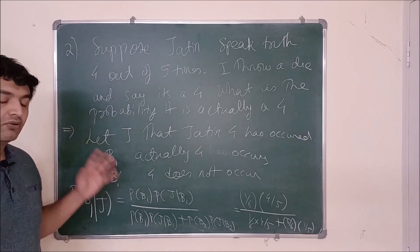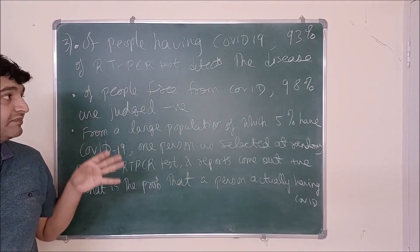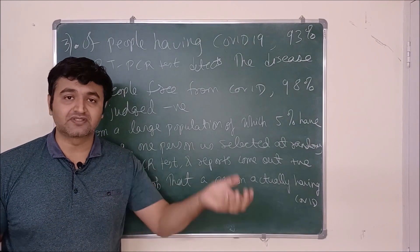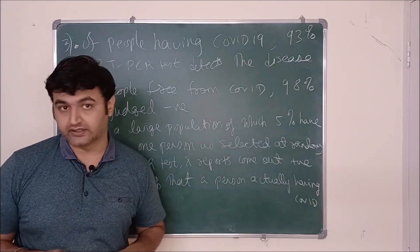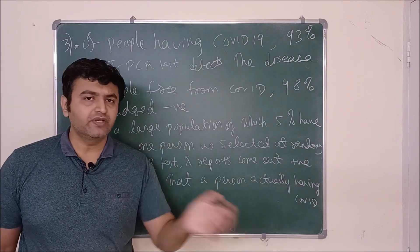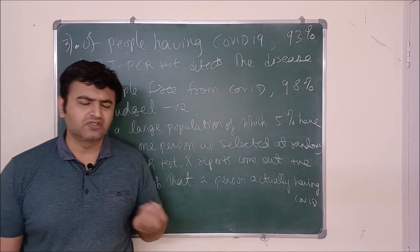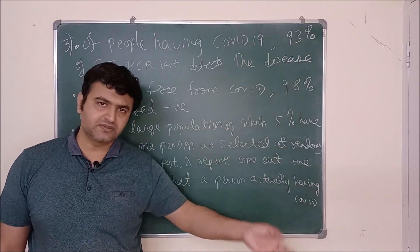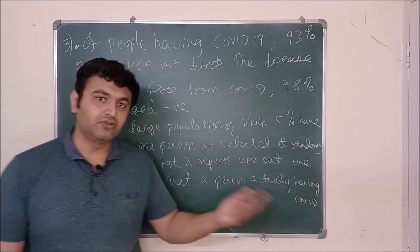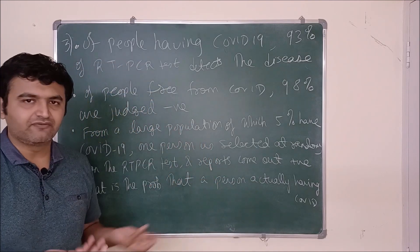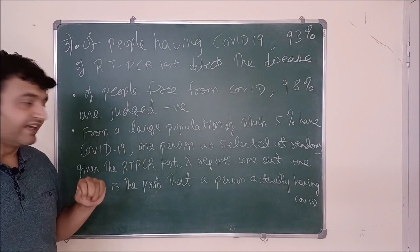For the last example: of people having COVID-19, 93% of RT-PCR tests detect the disease — meaning 7% go undetected (false negatives). Of people free from COVID, 98% are judged negative, meaning 2% may falsely test positive. From a large population, 5% have COVID. A person is selected at random, given an RT-PCR test, and the result comes out positive.